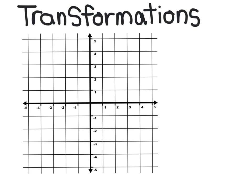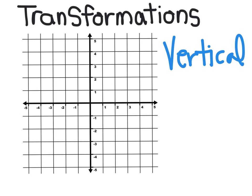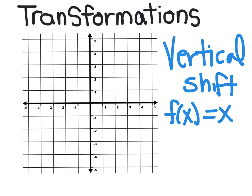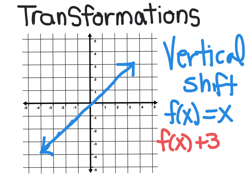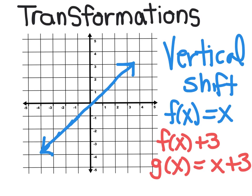Most of the questions on your unit quiz and test will be about transformations. The first transformation is a vertical shift. Starting with the linear function f of x equals x, if I add 3 to get a new function g of x equals x plus 3, the entire graph moves up 3 — it starts at 3 with the same slope and direction. Adding a positive number after x moves the graph up; a negative number moves it down.